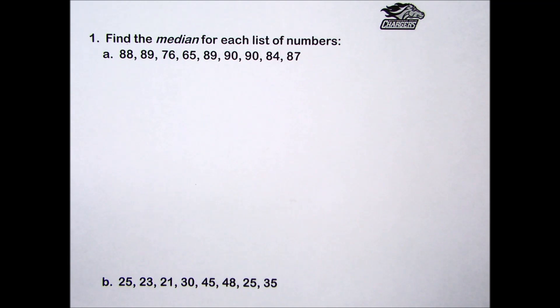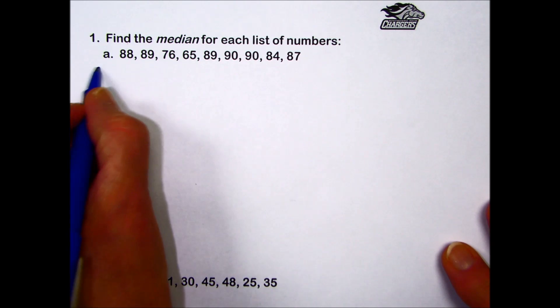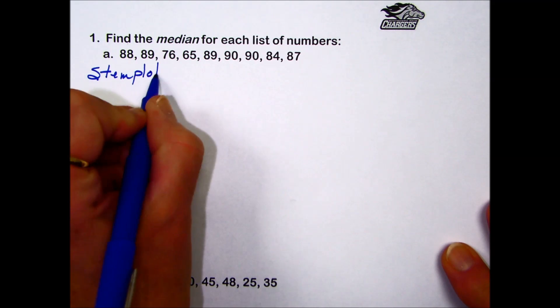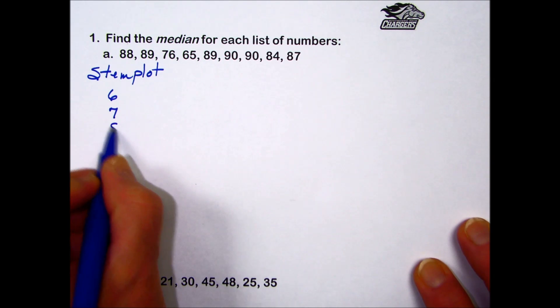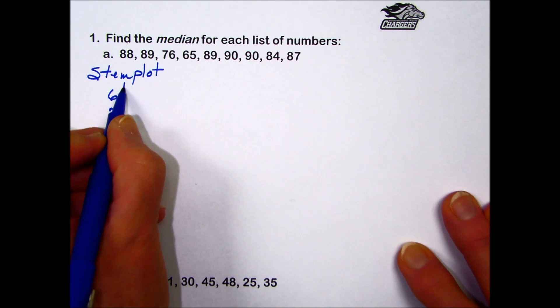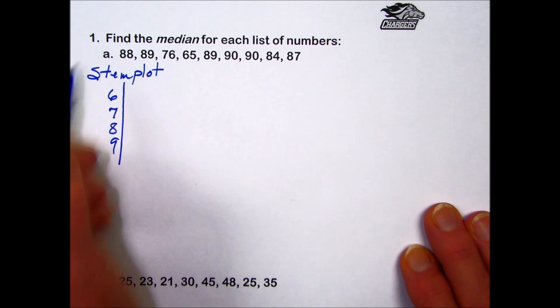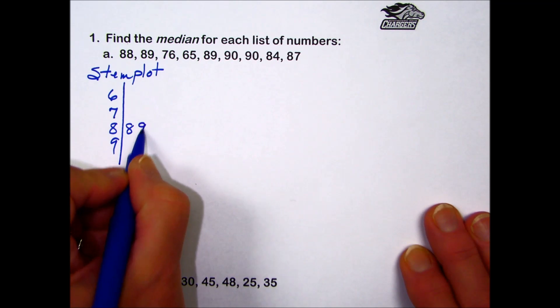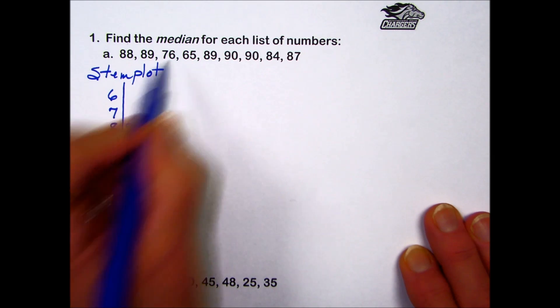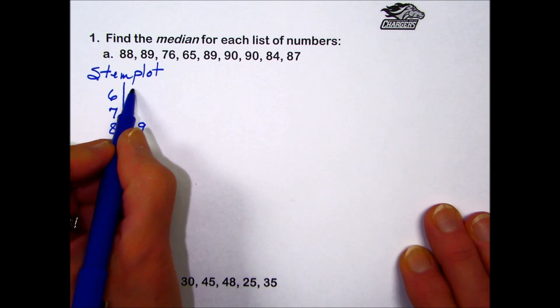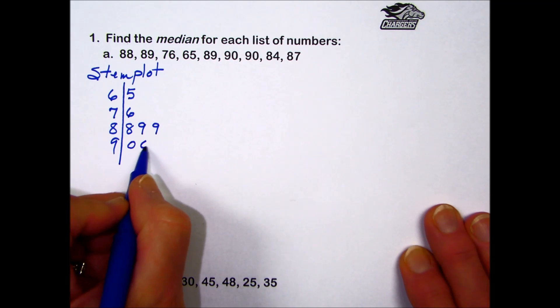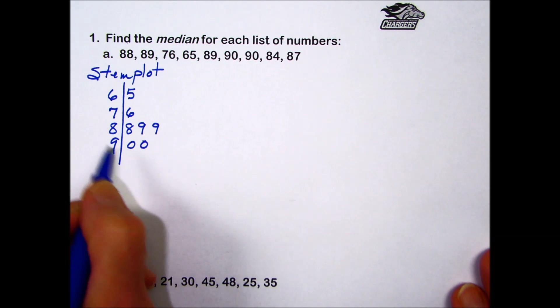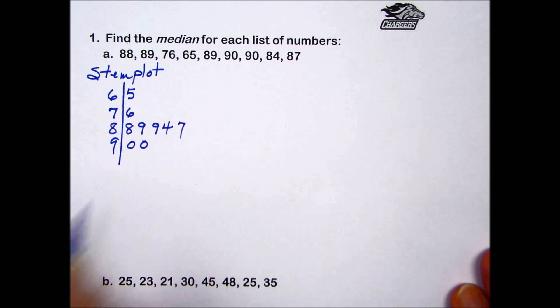For the first set of numbers, we can use a procedure called a stem plot to help us organize our numbers. Since we're running from numbers in the 60s through the 90s, our stem is going to be 6, 7, 8, 9. We'll go through the list: 88 goes in the 80s, 89 we'll put a 9. These are known as the leaf values. 76, here's our 70, we'll put a 6. Next is 65, we'll put a 5. Next number is 89, so we put a 9. 90, and again another 90, we'll put the zero. 84 is in the 80 category, and 87.